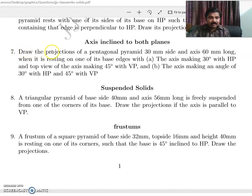Number seven: Draw the projections of a pentagonal pyramid 30 mm side and axis 60 mm long, when it is resting on one of its base edges. Part A: the axis making 30 degrees with HP and top view of the axis making 45 degrees with the VP. Part B: axis making an angle of 30 degrees with HP and 45 degrees with VP. So this problem has two parts.